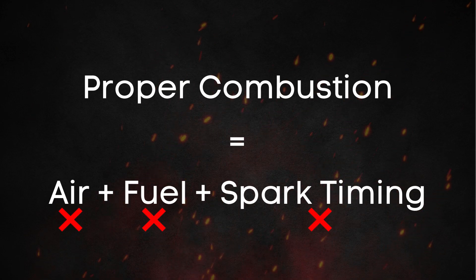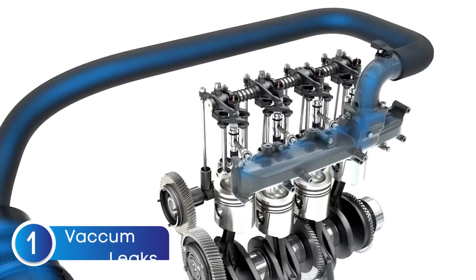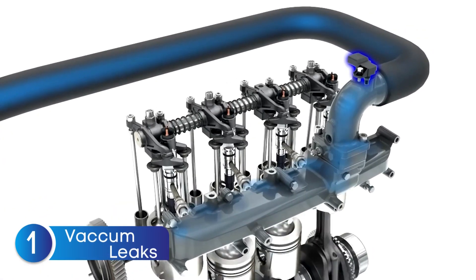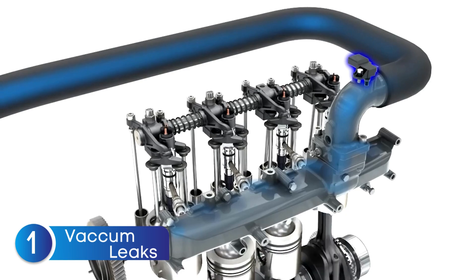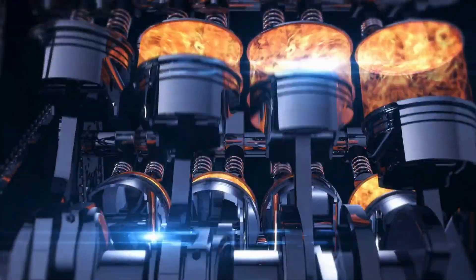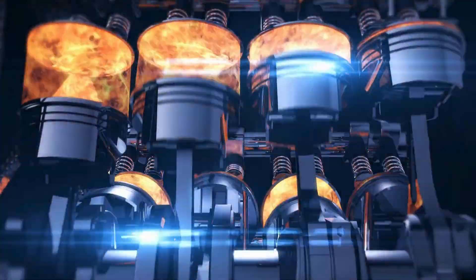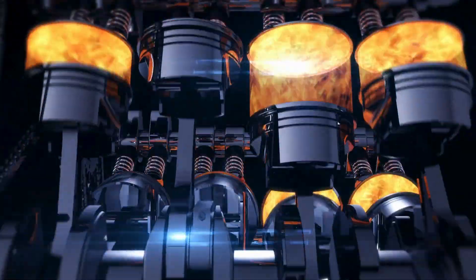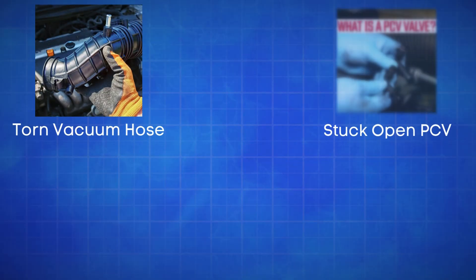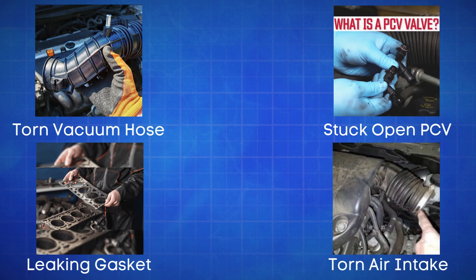Let's dive into some factors that can affect the air, fuel, or spark. First up, vacuum leaks. A vacuum leak allows unmetered air to enter the engine. This extra air throws off the air-fuel ratio, causing the mixture to run too lean, which leads to misfires. Common locations include a torn vacuum hose, a stuck-open PCV valve, a leaking intake manifold gasket, or anything torn in the air intake system after the MAP sensor.